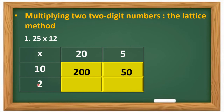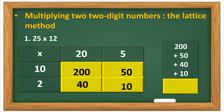Now we have to multiply 2 by 20. So 2 zeros are 0 and 2 twos are 4. So the answer is 40. Next is 2 multiplied by 5. So 2 fives are 10. Lastly we will be adding all these answers to find our final product: 200 plus 50 plus 40 plus 10. So our answer will be 300.